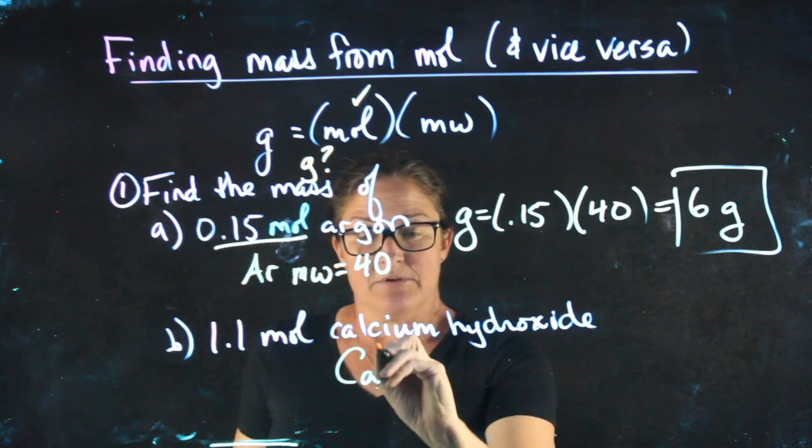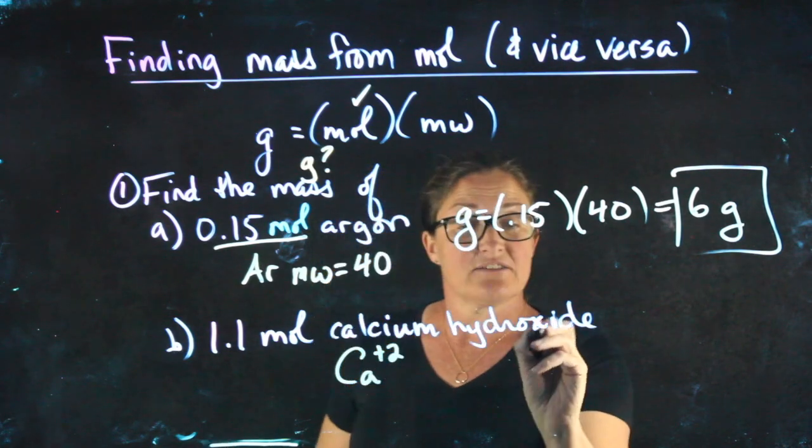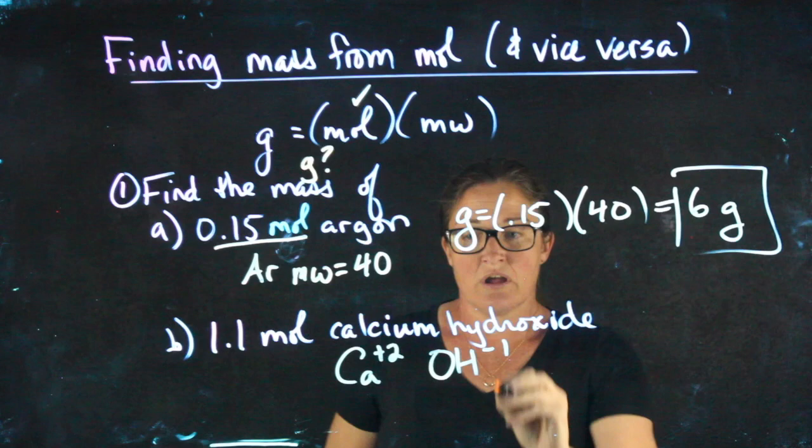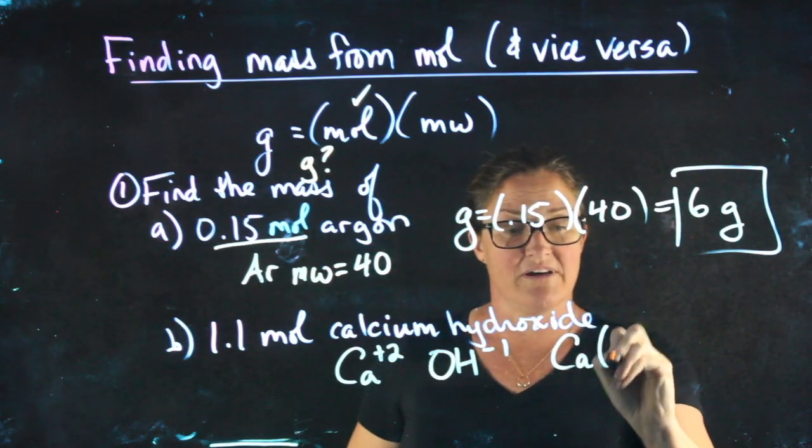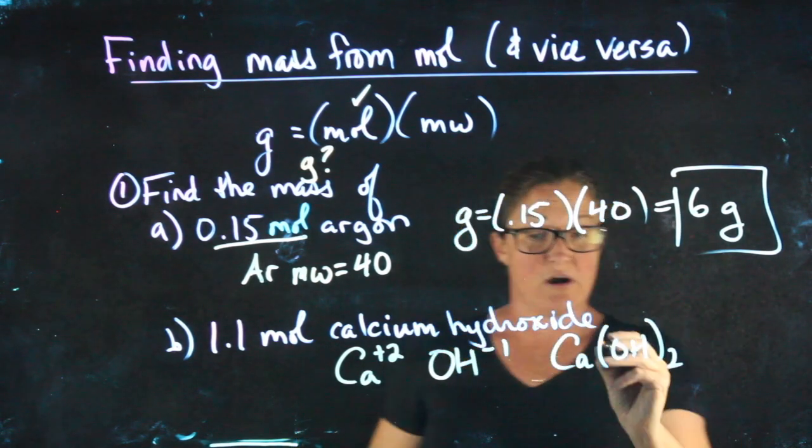Finding calcium on the periodic table, it has a +2 charge. Hydroxide is one of your polyatomic ions that has a -1 charge. When I put these two together, the correct way to write the formula is Ca(OH)2, and those parentheses really matter here.